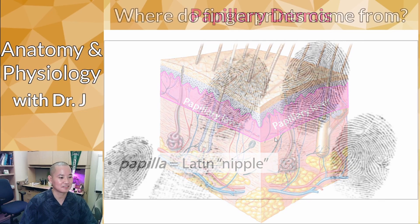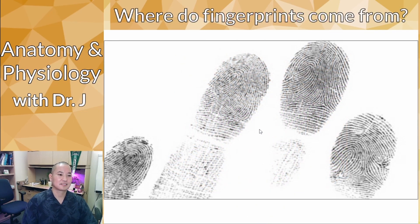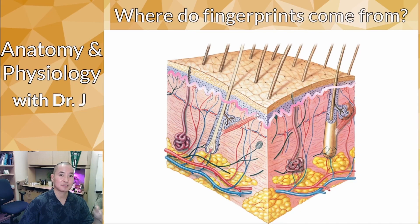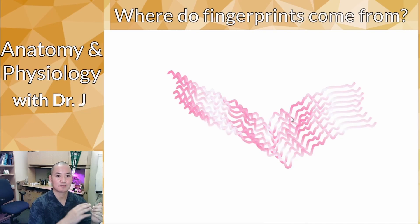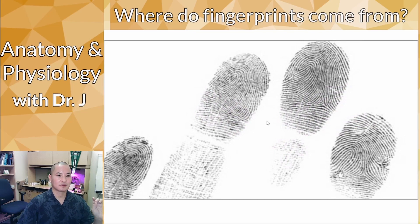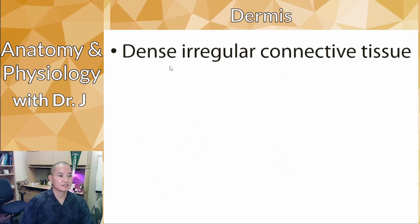I didn't come up with that — that's the old-school anatomists. But this is interesting: we all have fingerprints. The papillary layer is very important in forming them. If you take the ridge between the papillary layer and the epidermis and repeat that pattern over and over, you see ridges and valleys from the raised bumps of the papillae and the indentations between them. That's where our fingerprints come from.